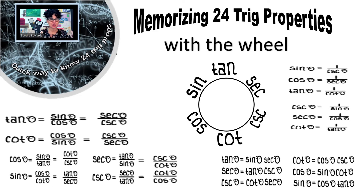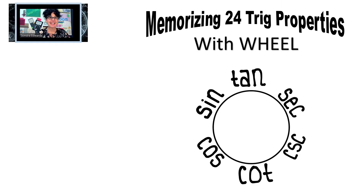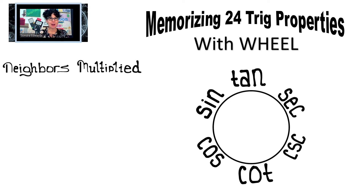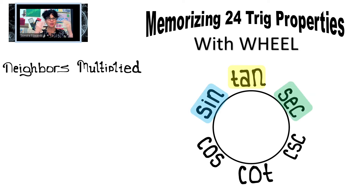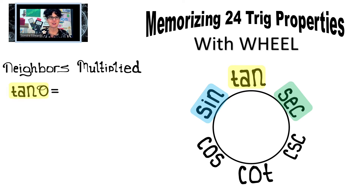We're going to get to memorizing this trig wheel. That part is actually going to be the easiest thing, but let me first show you how it works. Let's start with what I call neighbors multiplied. Using your imagination, who are tangent's next-door neighbors? They are sine and secant. So tangent is its neighbors multiplied together — neighbors multiplied. So tangent equals sine times secant.